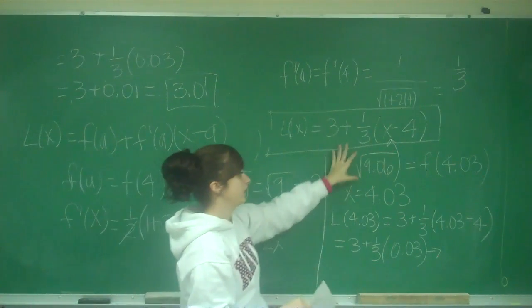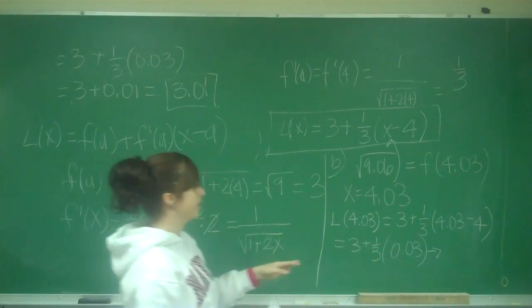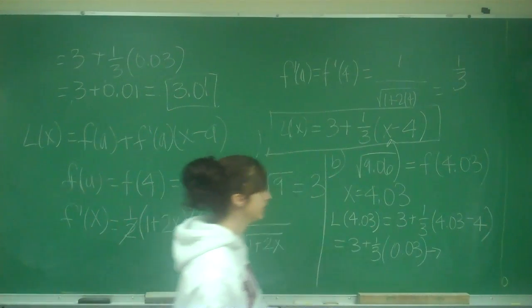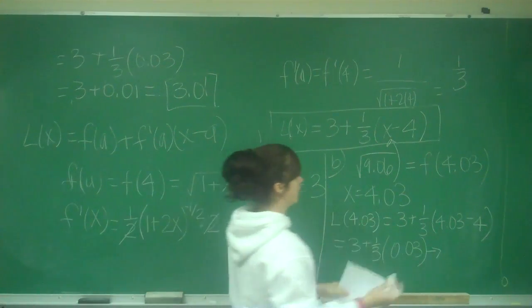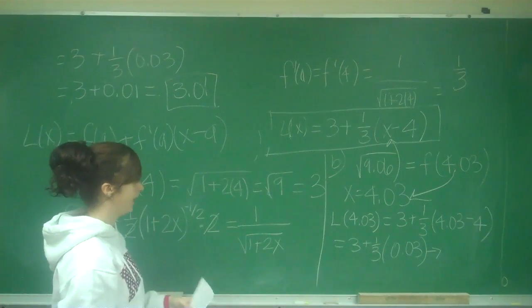And then in B, they wanted us to approximate the square root of 9.06. And they told us that was equal to f(4.03). And this is telling me that x equals 4.03.